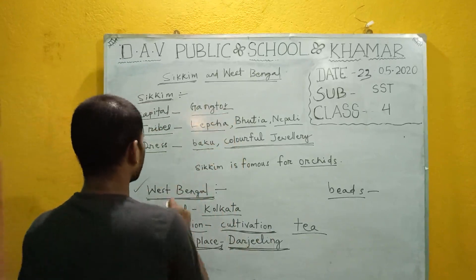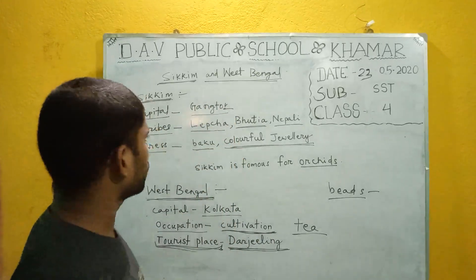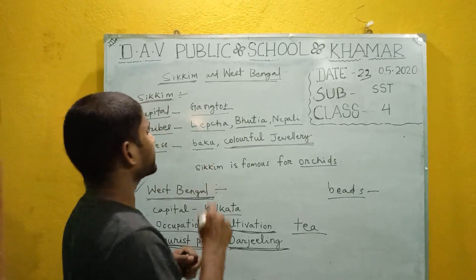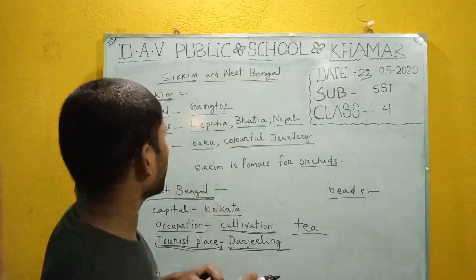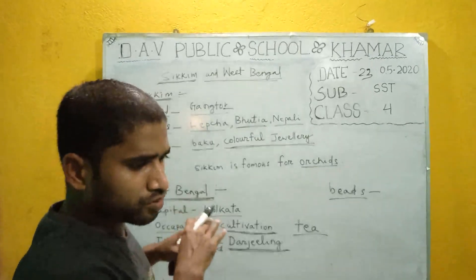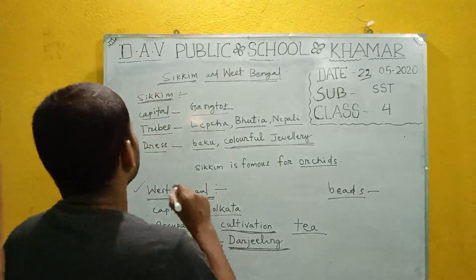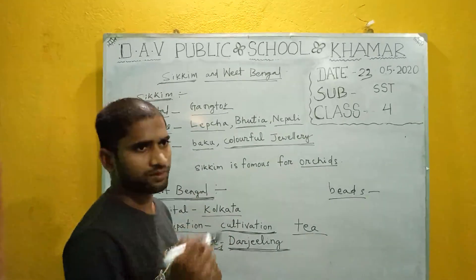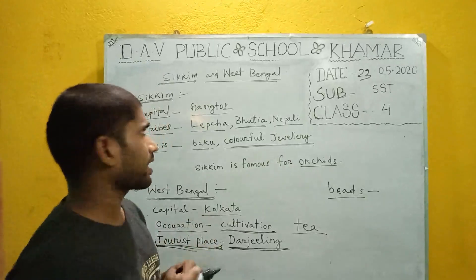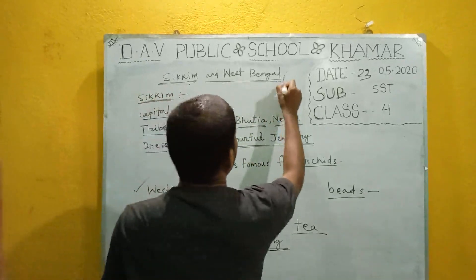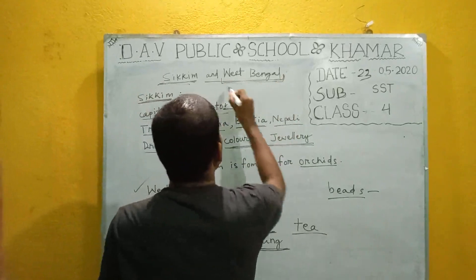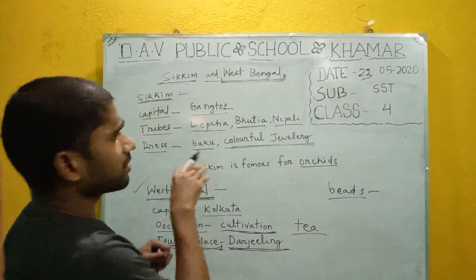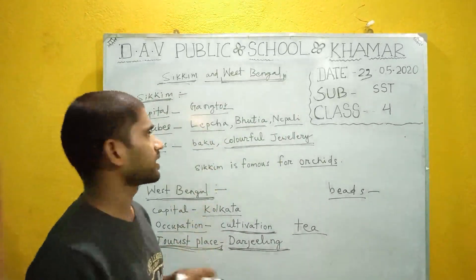So, one by one, we discussed about the different states that lie to the south of the Great Himalayas: Jammu and Kashmir, Himachal Pradesh, Uttarakhand, Sikkim, and West Bengal. These were the Indian states that lie to the south of the Great Himalayas.